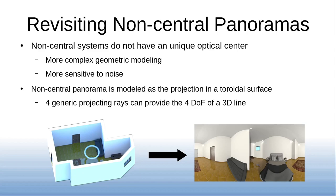To achieve our goal, we propose to revisit the non-central panoramas. Non-central panoramas can be modeled as the projection of the environment into a total surface. The optical center is distributed in a circular pixel radius. Each optical center presents a region where the projection is locally central, which corresponds with a column in the image. These panoramas provide 360 information of the environment, and the image distortion of the non-central acquisition system includes subtle differences allowing geometric 3D reasoning. However, due to the complex geometric modeling and sensitivity to noise, it has been little used.